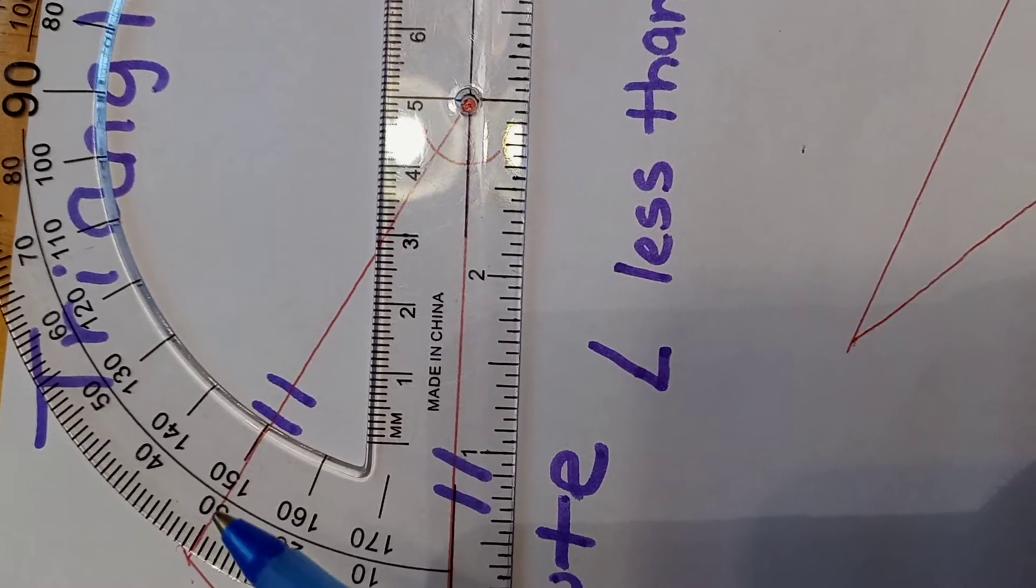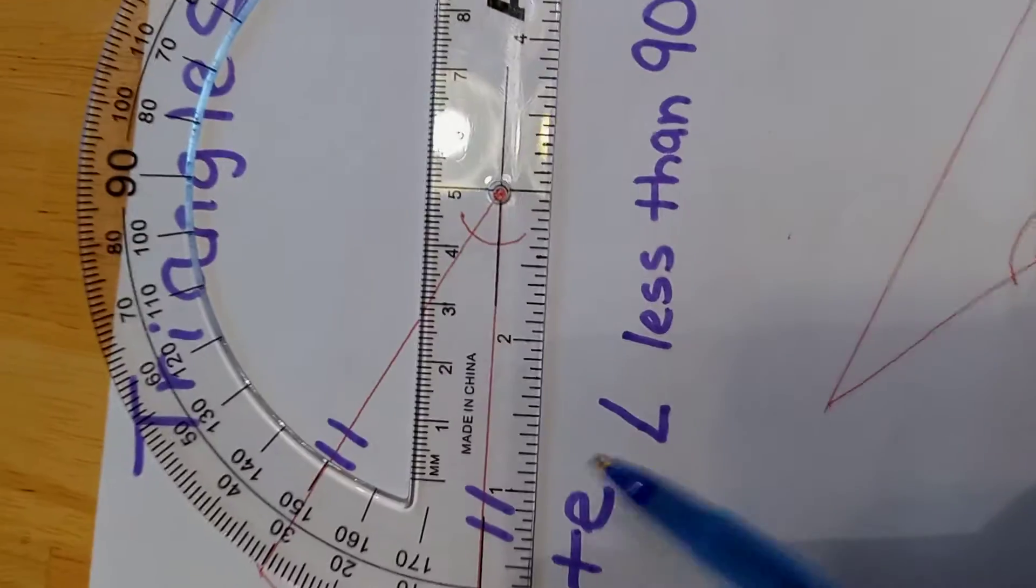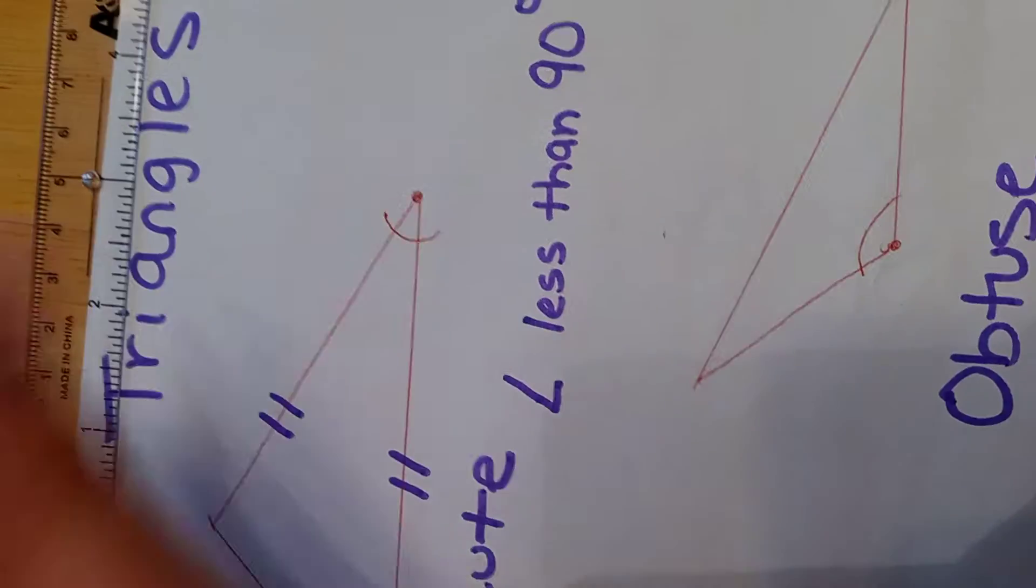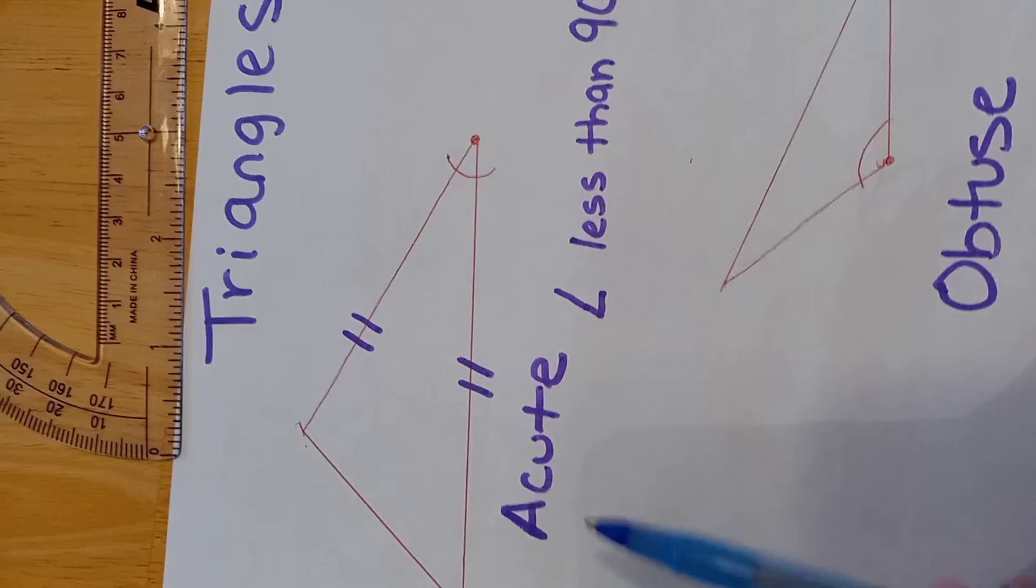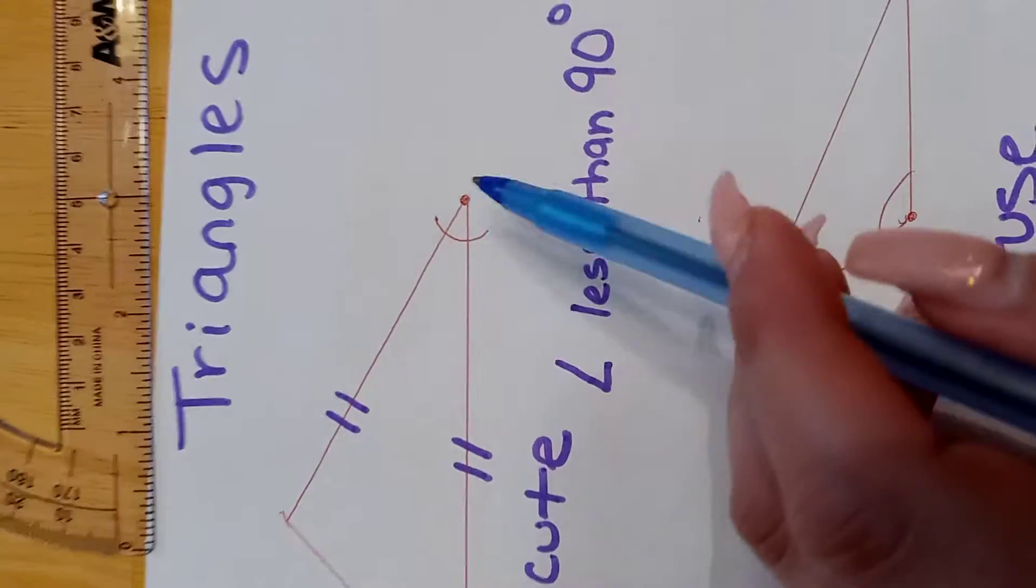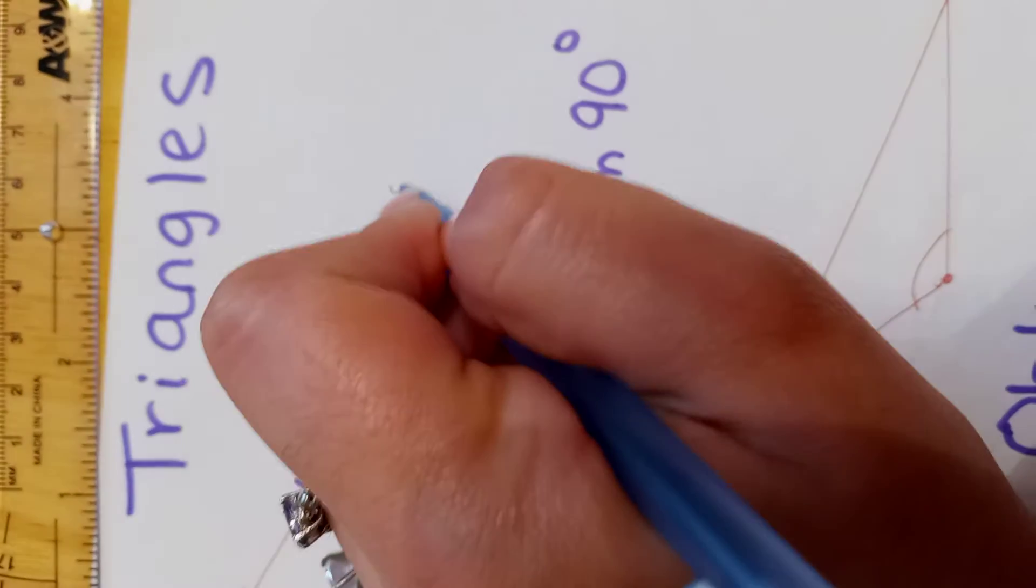The angle for this is 30 degrees. Since the angle is 30 degrees, meaning it's less than 90 degrees, it makes it an acute angle. So the angle for this is 30 degrees.